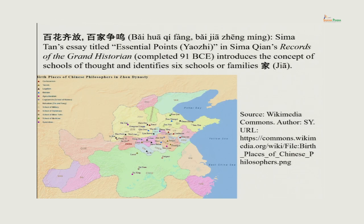Now let us look at the philosophy — a brief background of the historical context in which the different schools of thought emerged. There is a Chinese saying: Pai Hua Chifang, Pai Chia Chang Ming, meaning 'let a hundred flowers bloom, let a hundred schools of thought contend.' This is a very famous saying in China.